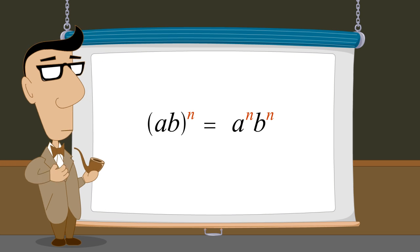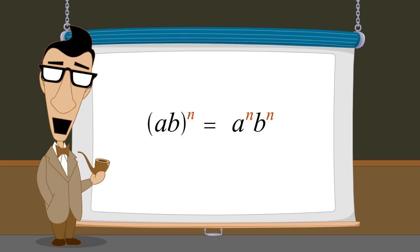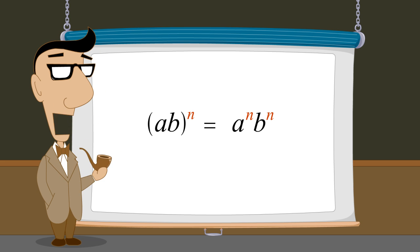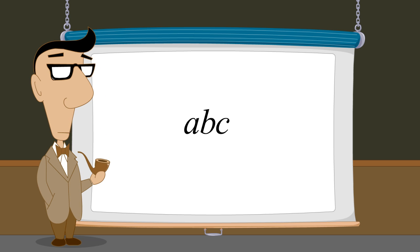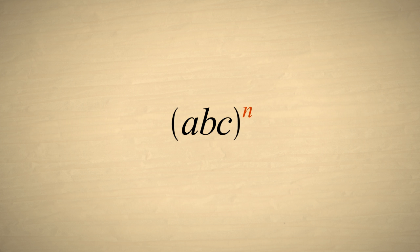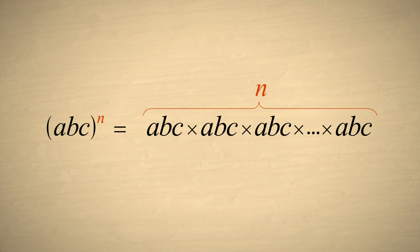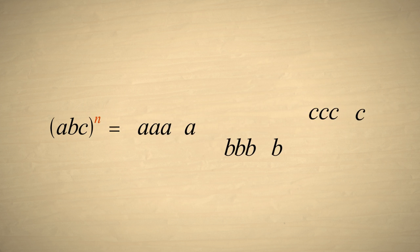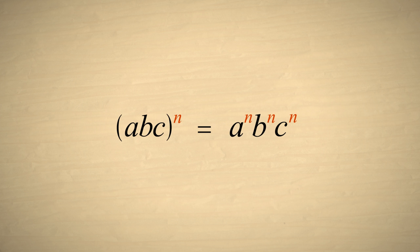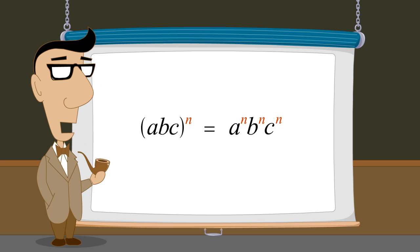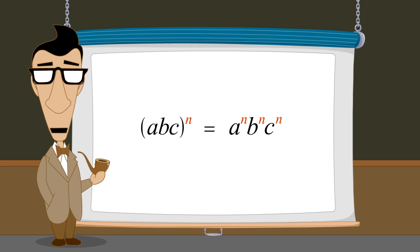So raising a product of two terms to a power is equivalent to raising each term individually to that power. This is true no matter how many terms there are in the product. For example, the expression could be a product of three terms, a, b, and c. Raising this expression to the nth power is equivalent to n copies of a times b times c, multiplied together. Rearranging the terms, we have n a's, n b's, and n c's multiplied together, which can be written as a to the n times b to the n times c to the n.